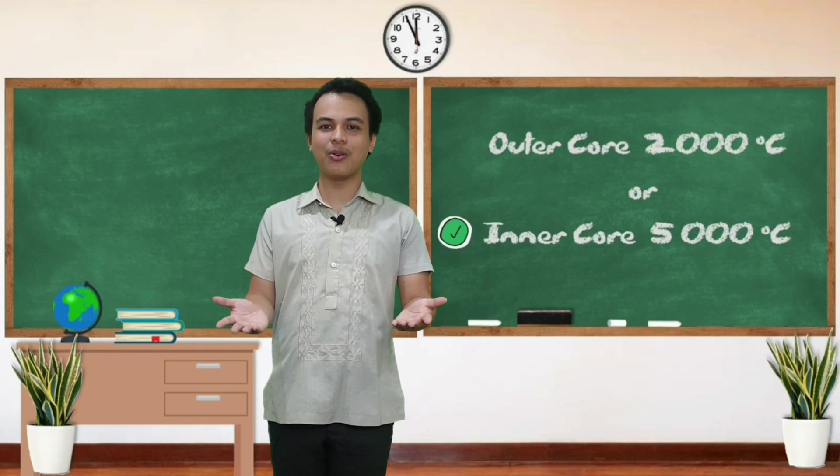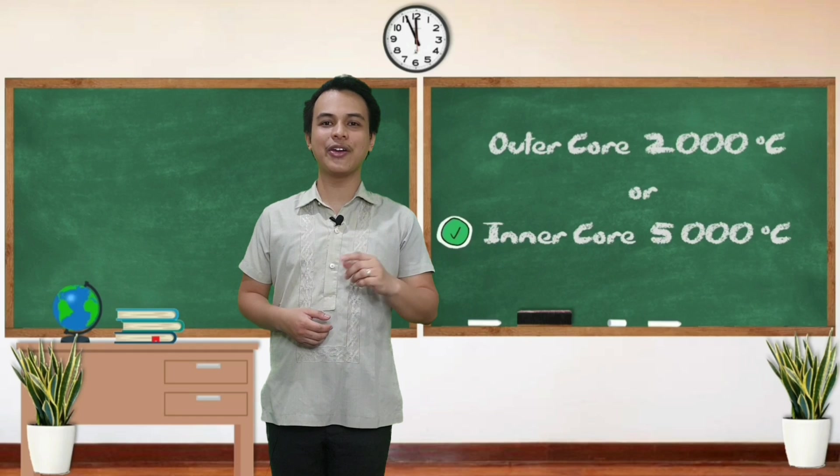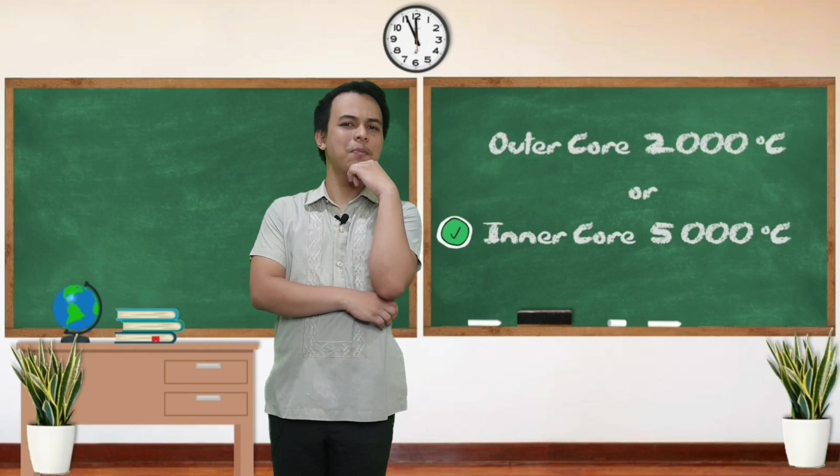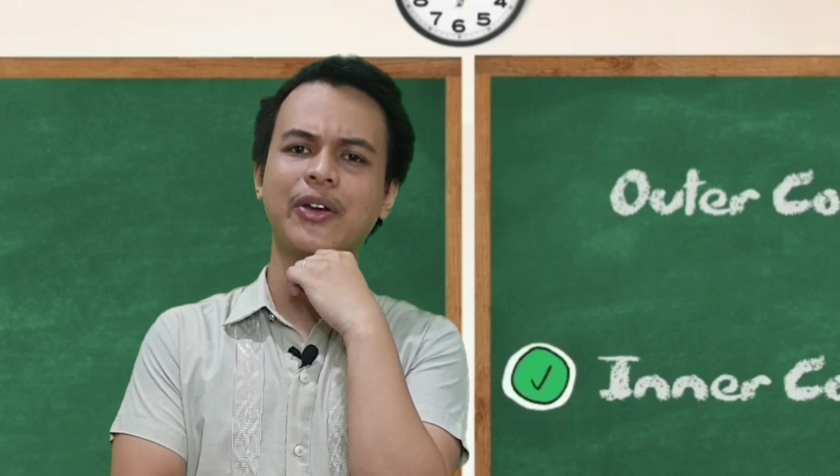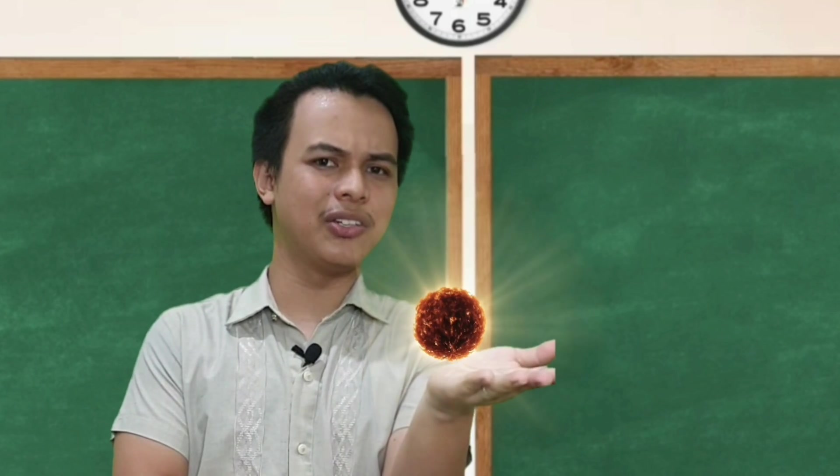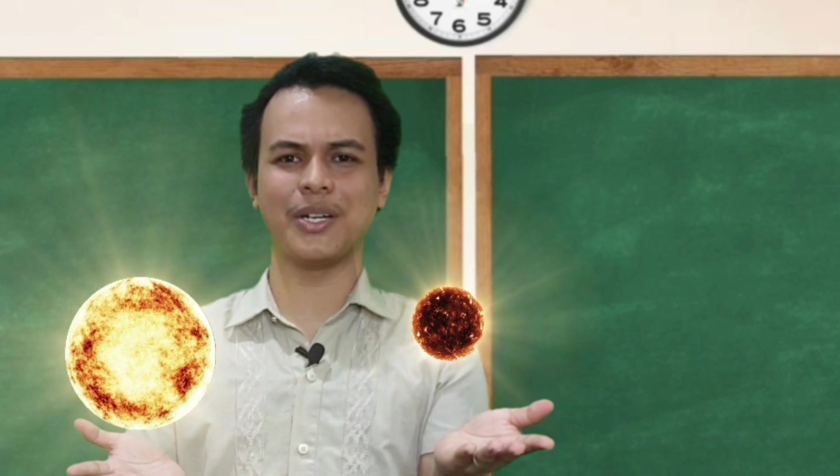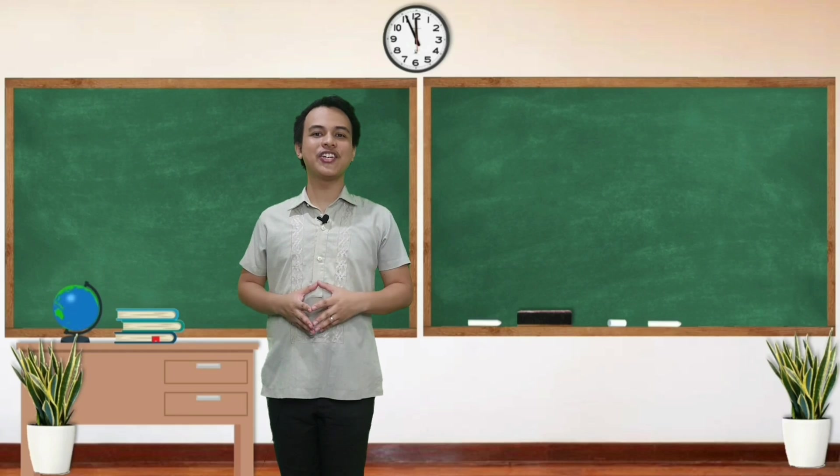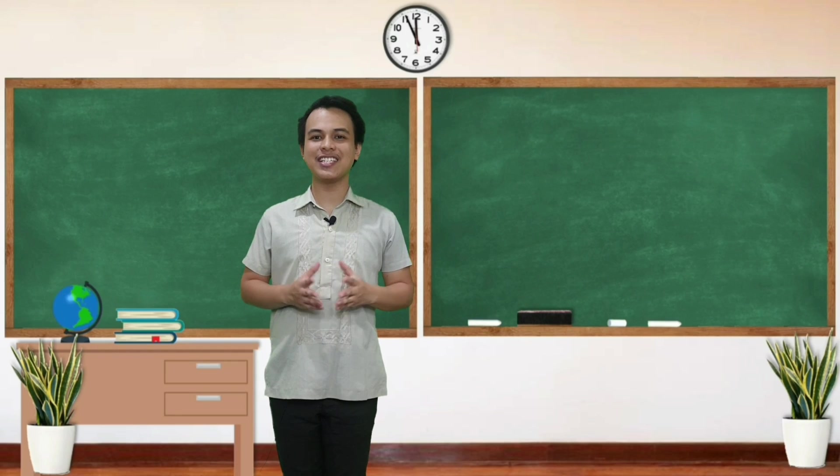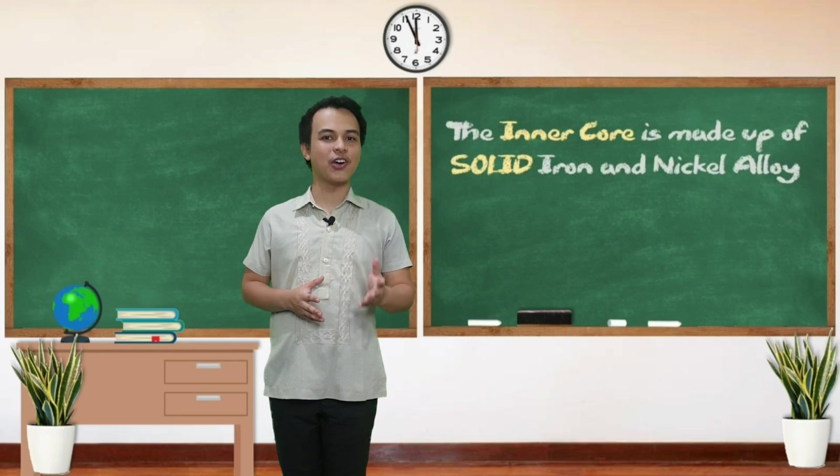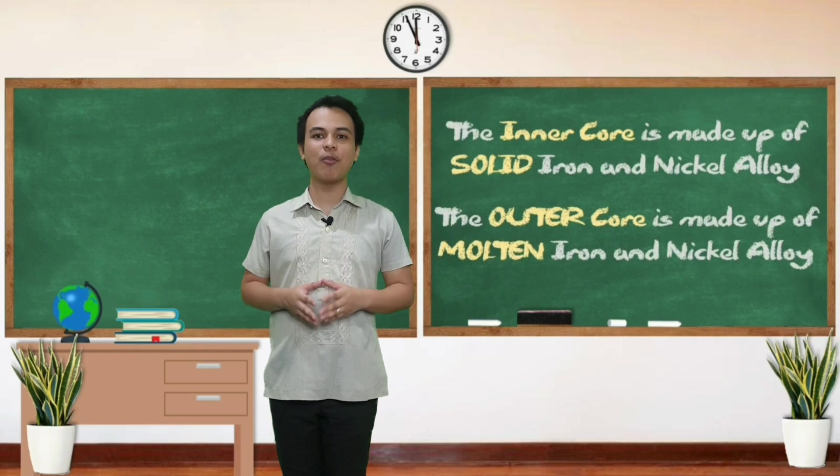Ang inner at ang outer core ay parehong binubuo ng iron and nickel alloy. So, kung mas mainit ang inner core, sino kaya sa kanilang dalawa ang may molten na iron and nickel alloy? Ang inner core o ang outer core? If you answered inner core, well, I cannot blame you. But the correct answer is outer core. The inner core is made up of solid iron and nickel alloy while the outer core is made up of molten iron and nickel alloy.